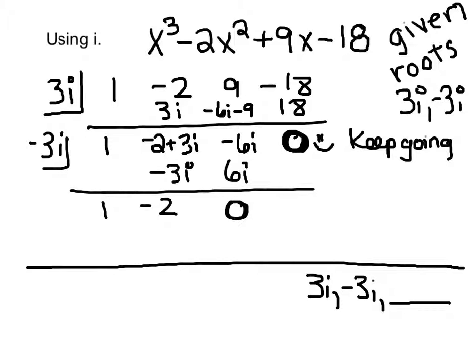So this first factor here, the 3i, is x - 3i. And the second factor here, the -3i, is x + 3i. And then the third factor is this 1 and the -2, and that becomes x - 2.